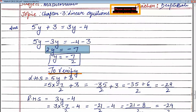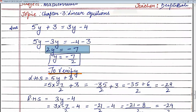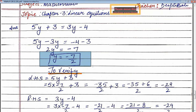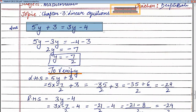Transposing 2 to the right-hand side, it becomes division. So y is equal to minus 7 upon 2. We got the value of the variable as an improper fraction. So minus 7 upon 2 is the solution of this equation.